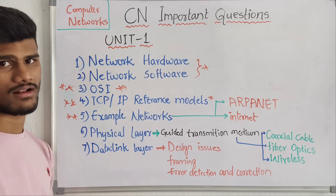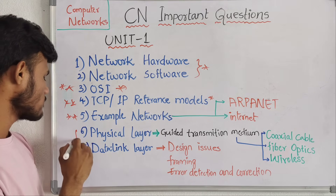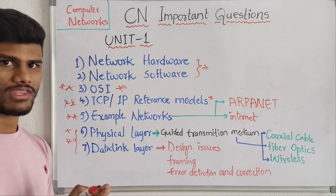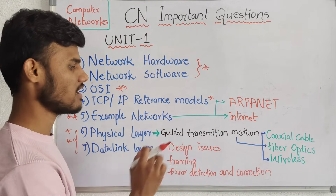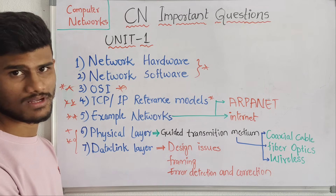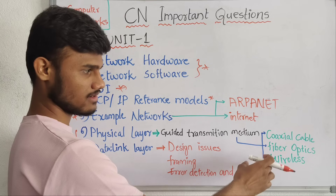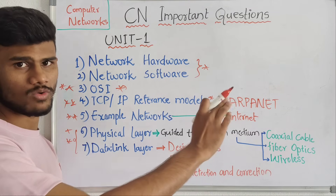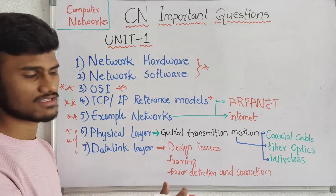It's maximum two marks. Then next, these are very very important questions — physical layer and data link layer. In the physical layer, we have guided transmission. We have three topics: coaxial cable, fiber optics, and lastly wireless transmissions. This is the most important question.